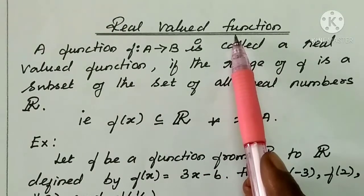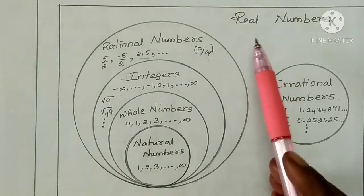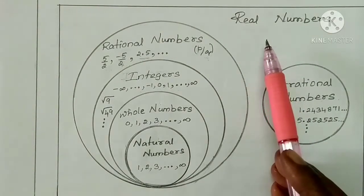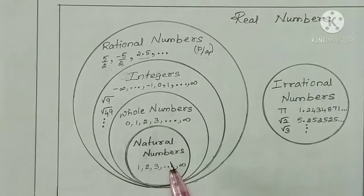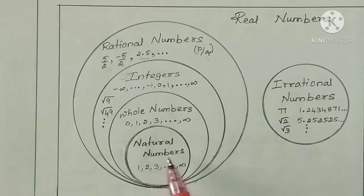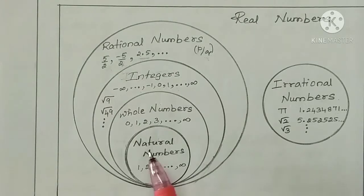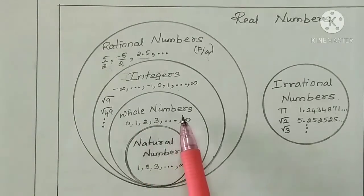We will learn real numbers. Now, real numbers — there is a set, there is a diagram. Natural numbers: we have positive values, starting value 1, up to infinity. Here is a set — natural numbers.